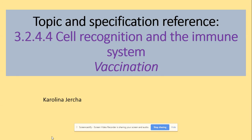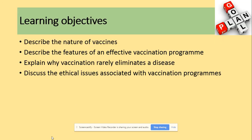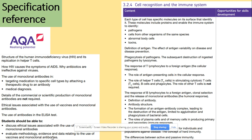Hi guys, we will be looking at vaccination today. You need to be able to describe the nature of vaccination, describe the features of an effective vaccination program, explain why vaccination does not always eliminate a disease, and discuss the ethical issues associated with vaccination programs. Our specification is just here, covering ethical issues associated with vaccines and monoclonal antibodies.